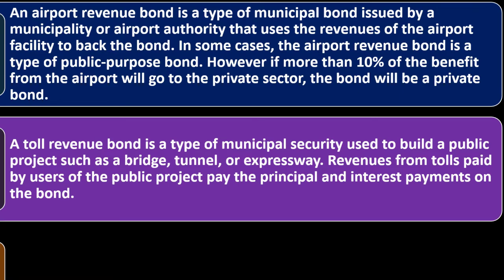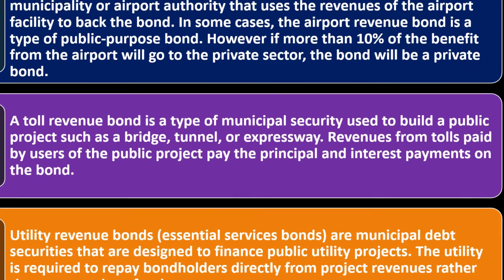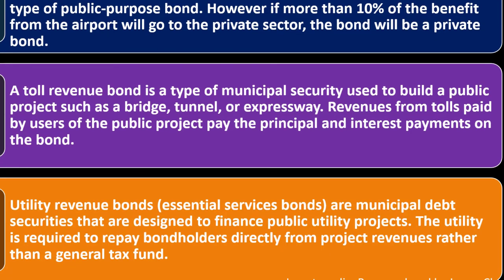A toll revenue bond is a type of municipal security used to build a public project such as a bridge, tunnel, or expressway. Revenues from tolls paid by users of the public project pay the principal and interest payments on the bond. Utility revenue bonds, also called essential services bonds, are municipal debt securities designed to finance public utility projects.